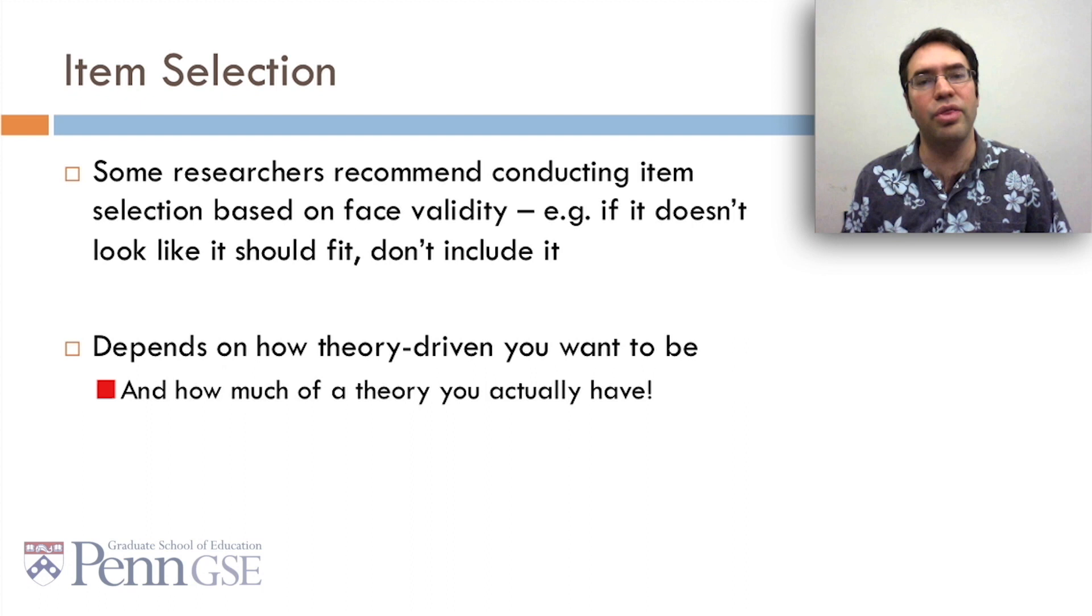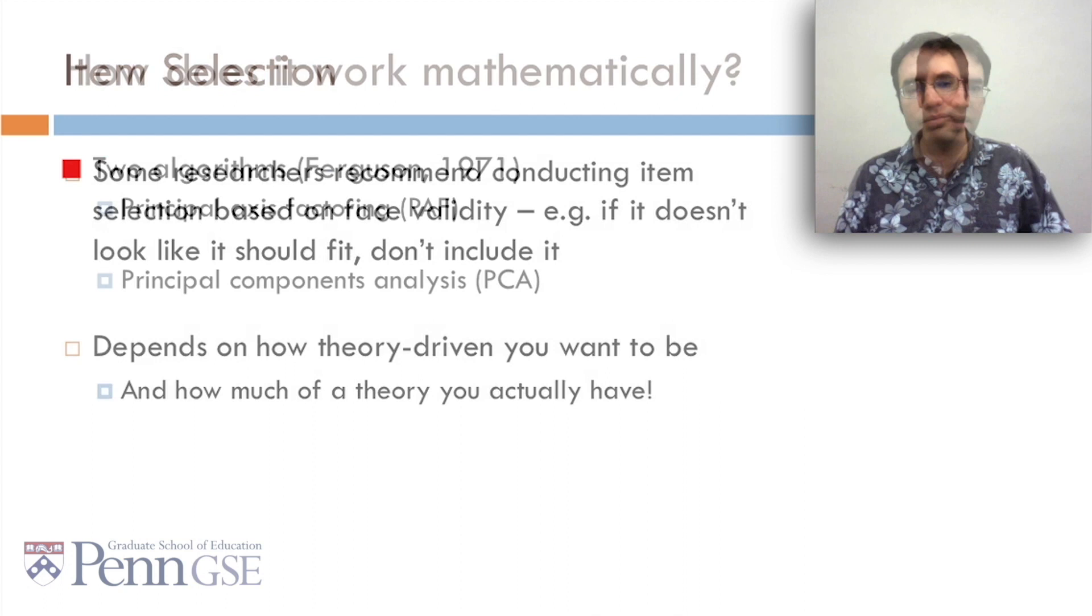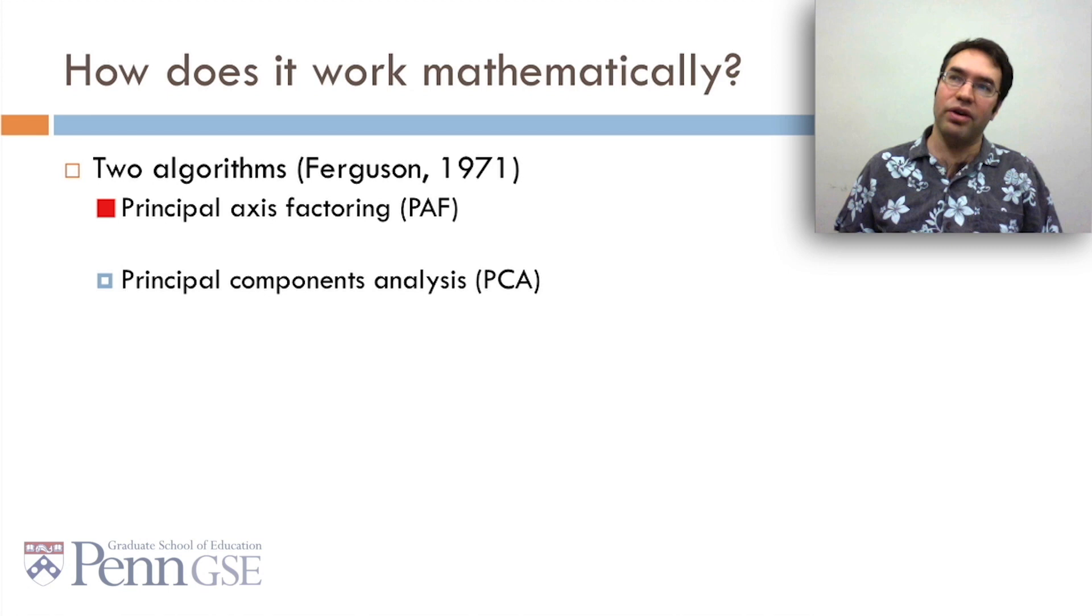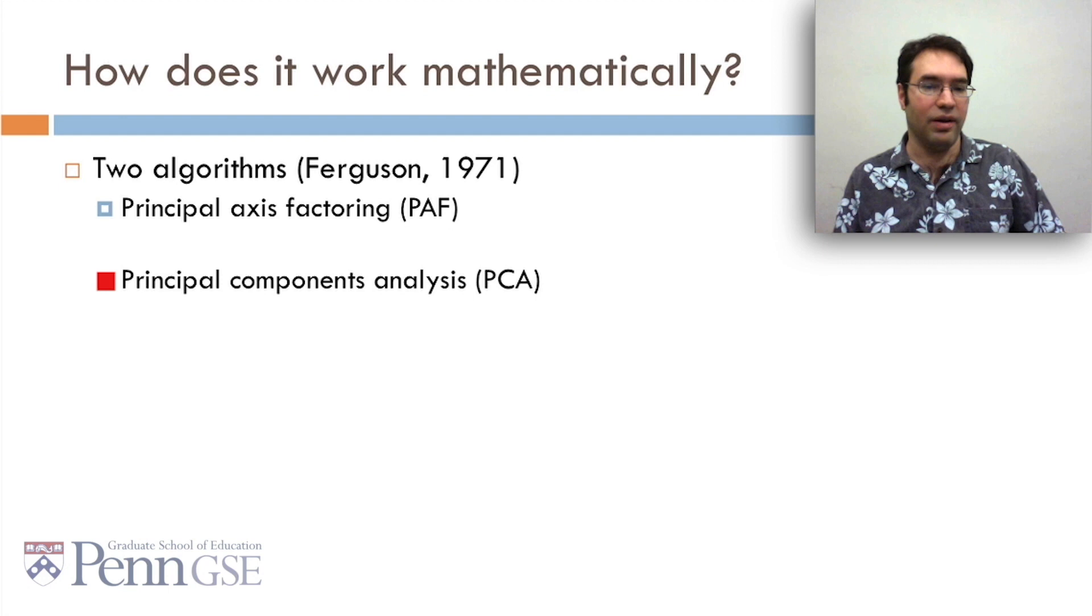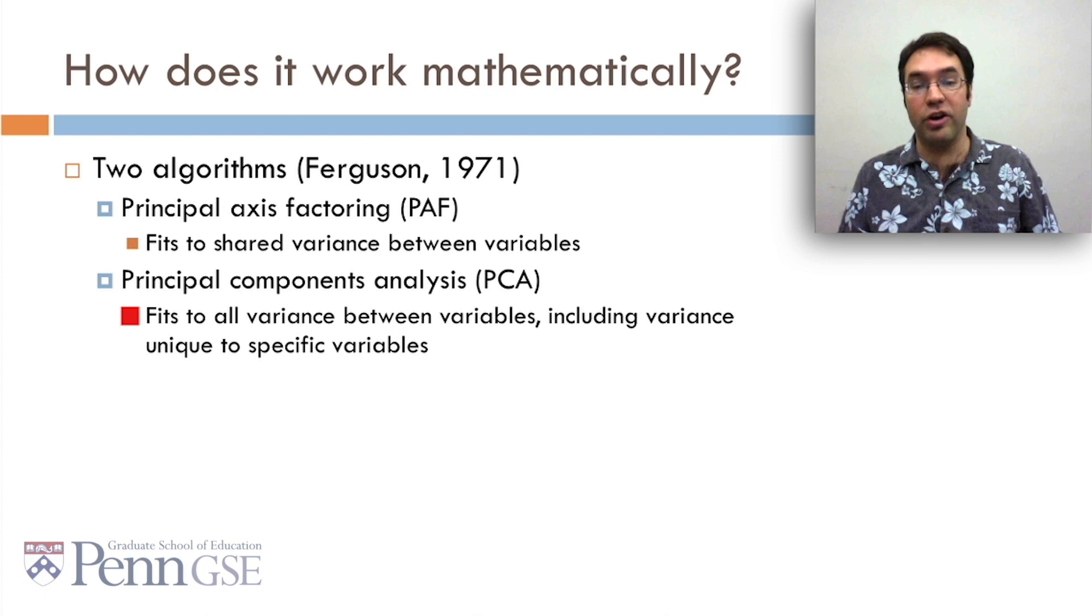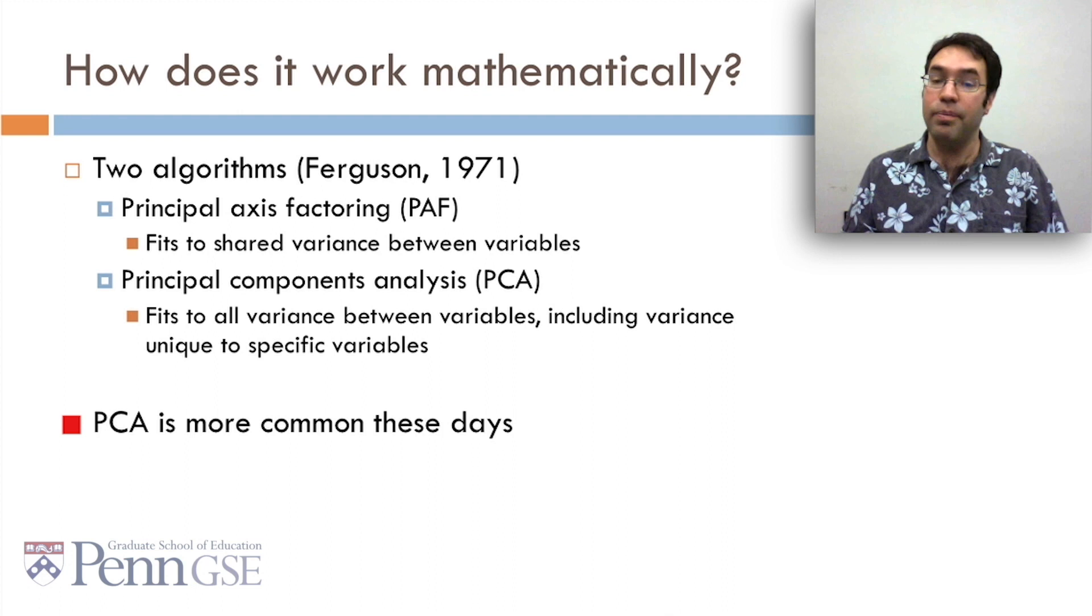Okay, how does factor analysis work mathematically? How do we get these factors? Well, there are two algorithms. The first one is principal axis factoring, which some people rather confusingly just call factor analysis. And there's principal component analysis, PCA. Principal axis factoring fits to the shared variance between variables. It tries to find what the shared variance is. And principal component analysis fits to all variance between variables, including the variance unique to specific variables. PCA is more common these days. It really doesn't matter so much, especially as the number of variables increases. PCA is a little bit easier to compute.